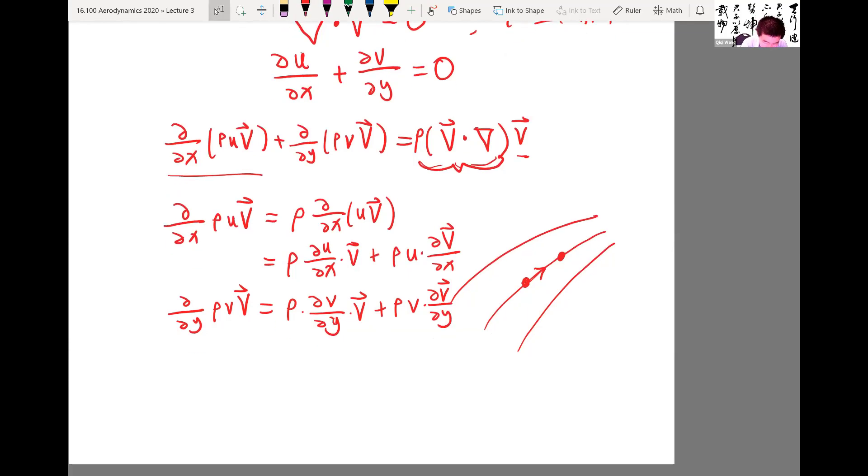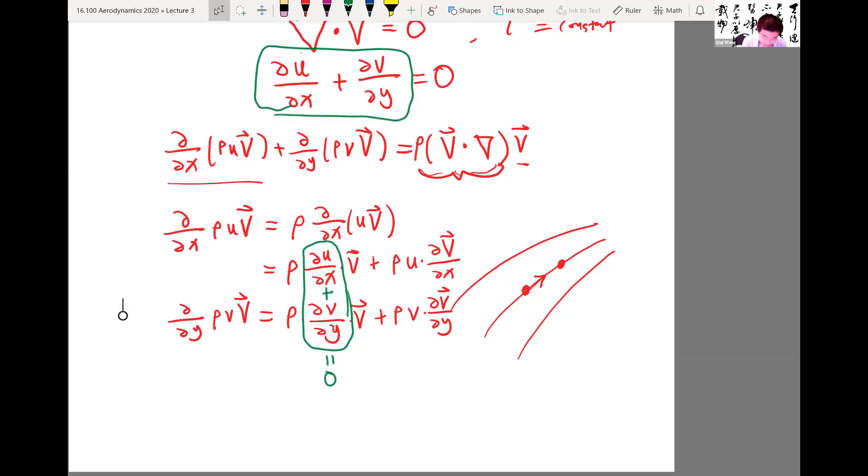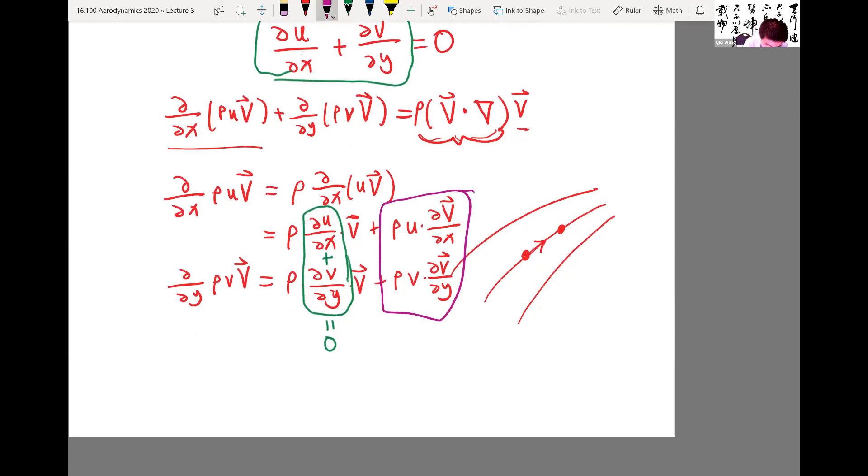Now, when you add these two terms together, ρ is the same, vector V is the same. If you add these two terms together, what you'll find out is that we get this divergence of velocity, which is equal to zero, right, if you add them. Okay, that means the total of the momentum flux can just be equal to the summation of the second term. So let's write this down what these are. This is ρ times u times the x derivative of V, right?